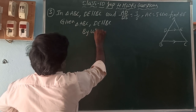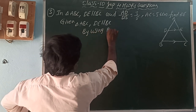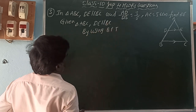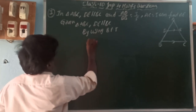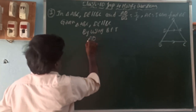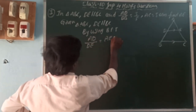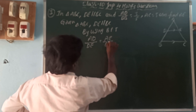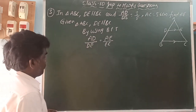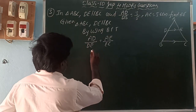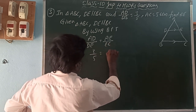By using BPT, the Basic Proportionality Theorem, we can write AD by DB is equal to AE by EC. Here, AD by DB is given as 3 by 5.